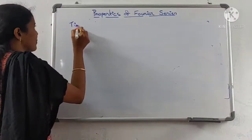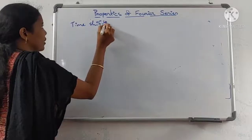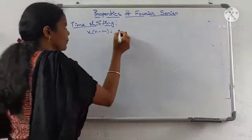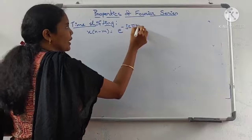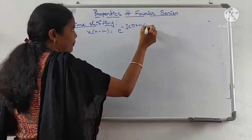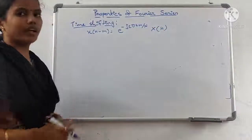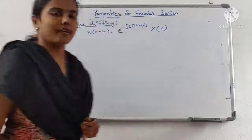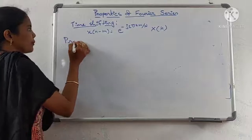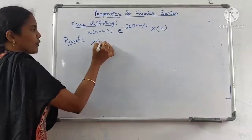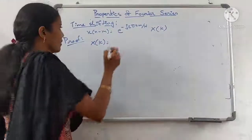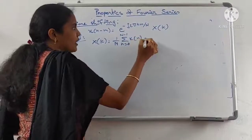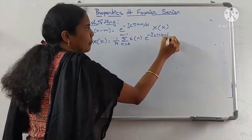The second property is the time shifting property. It states that the Fourier series of x(n minus m) is equal to e^(minus j 2 pi k m / N) into X(k). For the proof, we take the Fourier series coefficient X(k) equal to 1/N summation from n=0 to N-1 of x(n) e^(minus j 2 pi k n / N).